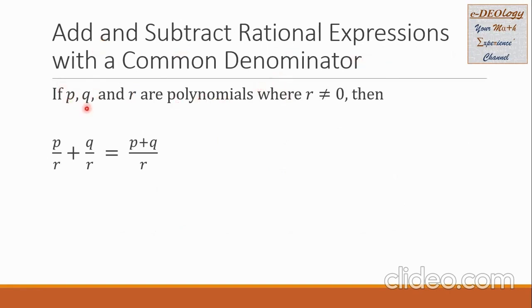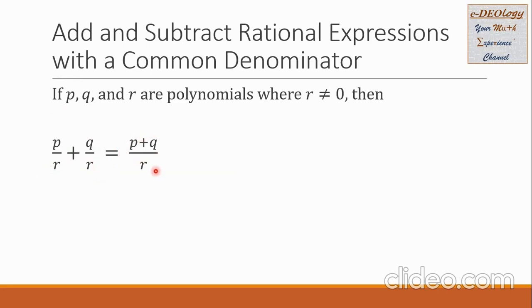If P, Q, and R are polynomials, where R is not equal to zero, then the rational expression P over R plus Q over R — take note, the denominators are common — and this is equal to the sum of P and Q, the numerators, all over the common denominator R.